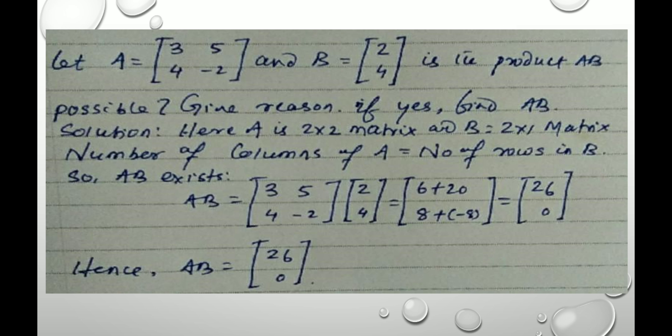Here, A is a 2 into 2 matrix, and B is a 2 into 1 matrix. Then, the number of columns of matrix A is equal to number of rows in matrix B. It satisfies the condition for multiplication of two matrices. Then, the product of the matrix A and B do exist. AB is equal to 3, 5, 4, minus 2 times 2, 4 is equal to 6 plus 20, and 8 plus minus 8, that's equal to 26 and 0. Hence, AB is equal to 26, 0.